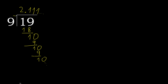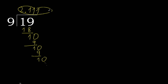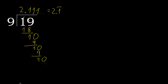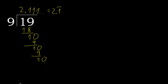19 divided by 9 is here, or after the point: 1, repeat — like this. 19 divided by 9 is here, or here.